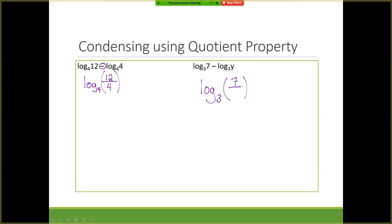Now we're going to combine using multiple steps — condensing using multiple properties. The first thing I always warn my students to check for is the power property. First thing I look for when condensing is to make sure there are no numbers written out front of your log. When I look in front of my logs, I notice I have this 5 — that 5 has got to go. So the 5 gets moved up, giving me log x to the 5th power minus log 4. Now I've used the power property. Since it's subtraction, I use the quotient property: x to the 5th in the numerator, plain 4 in the denominator. This is base 10, so it's not necessarily written but needs to be understood.